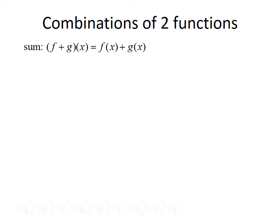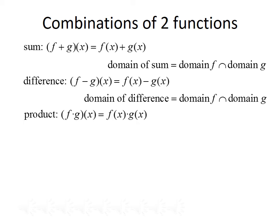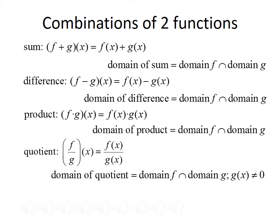Now, let's talk about combinations of two functions. We can take the sum of two functions, f plus g of x, by adding the two functions together: f plus g of x equals f(x) plus g(x), and the domain of the sum will be the domain of f intersected with the domain of g. The difference f minus g of x equals f(x) minus g(x), with the same domain intersection. The product f times g of x equals f(x) times g(x), also with domain f intersected with domain g. Finally, the quotient f divided by g of x equals f(x) divided by g(x), with the domain being f intersected with g, with the restriction that g(x) cannot equal zero.